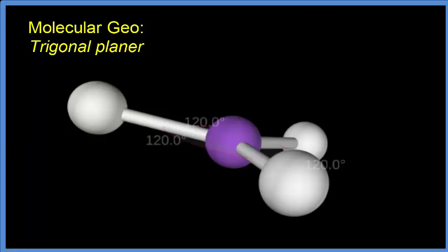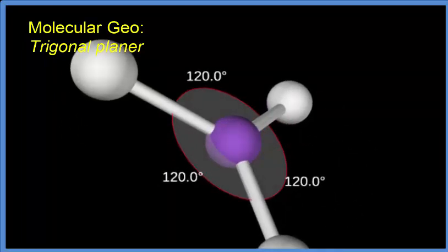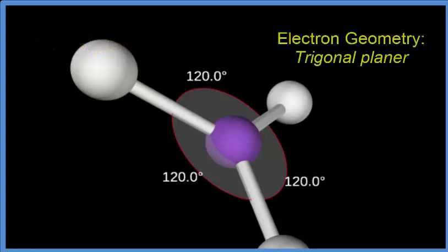If we look at the bond angles, we'd see that they are 120 degrees. Each one of these bond angles is 120 degrees. For the electron geometry, since there aren't any lone pairs of electrons, the molecular geometry and the electron geometry are the same - trigonal planar.